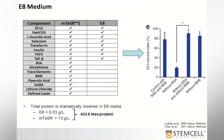What I think is the most striking feature of this new media is that the total protein content is dramatically lower. E8 has a protein concentration of about 0.03 grams per liter, while M-Teaser, as published, is 13 grams per liter. So this is over 400 times less protein, which is going to lead to a dramatic difference in the environment that the cells are exposed to.